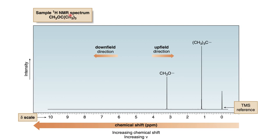So it has two different types of protons. If you expand the structure of tertiary butyl, it contains three methyl groups — CH3, CH3, CH3 — which have the same chemical environment. The methyl attached with the oxygen has a different chemical environment because it is attached to an electronegative element, which is oxygen.